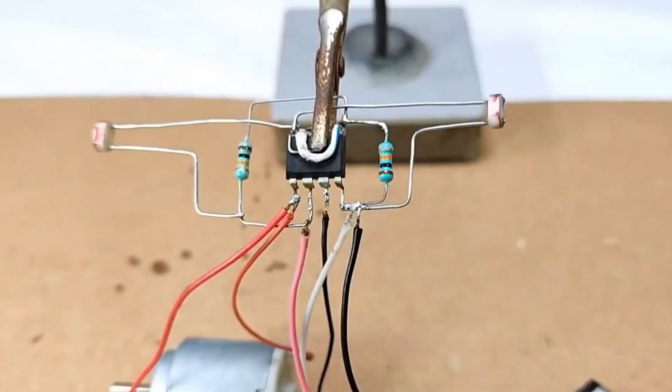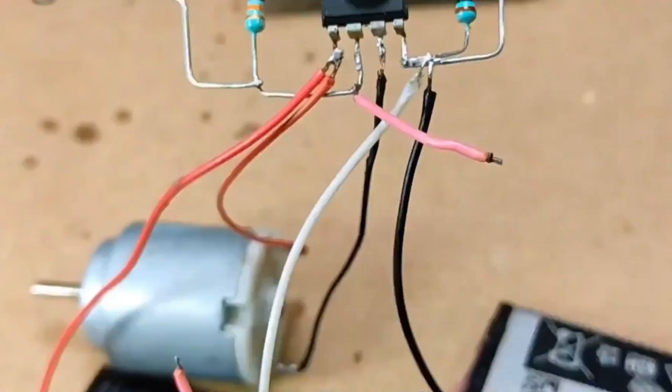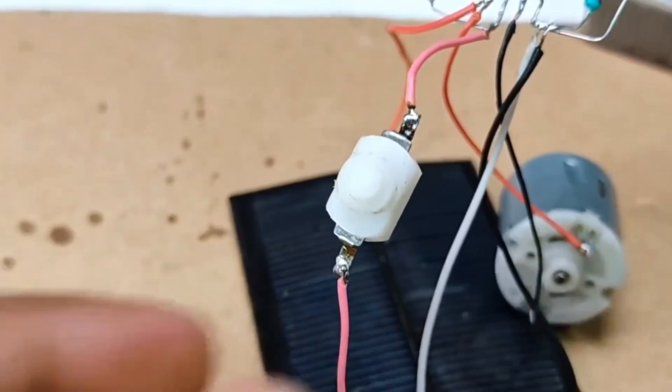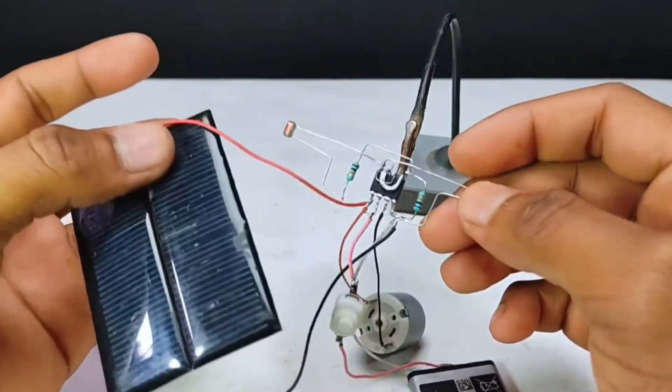For added convenience, a self-locking switch can be installed in the power supply line. When the circuit is not in use for extended periods, this switch allows for easy power disconnection. Once everything is set up, the solar tracking circuit is complete.